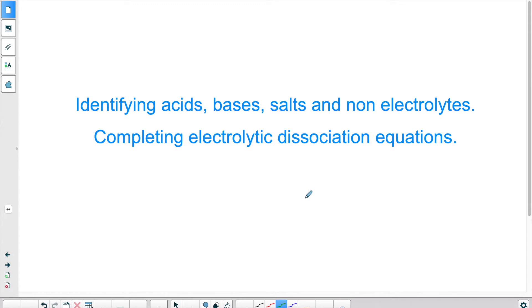as well as non-electrolytes, and we will also be completing incomplete electrolytic dissociation equations. So when an acid breaks apart, or a base, or a salt, what kind of ions get produced, or if you're given the actual ions, what was the original substance. Okay, so let's take a look.